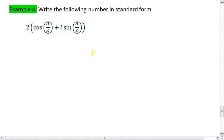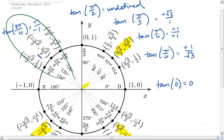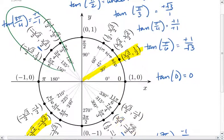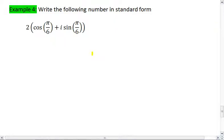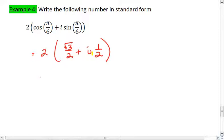We find cosine of π/6 and sine of π/6 on our unit circle. For π/6, sine of π/6 is 1/2, and cosine of π/6, which is your x value, is root 3 over 2. Plugging those values in, we get 2 times cosine of π/6 is root 3 over 2, plus i times sine of π/6 which is 1/2. Distributing the 2, we get root 3 plus i.